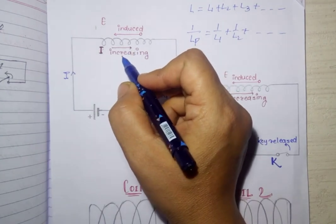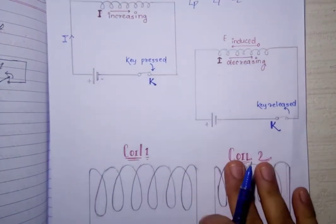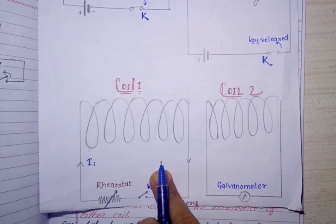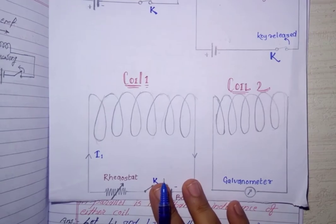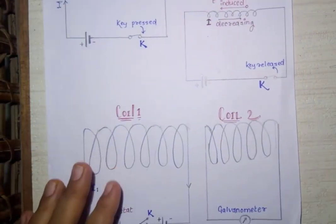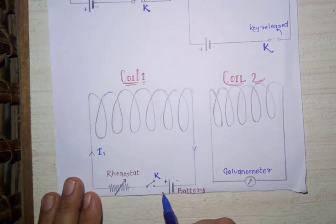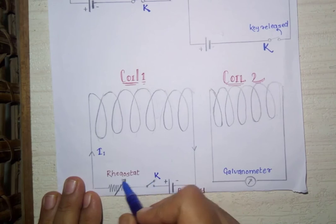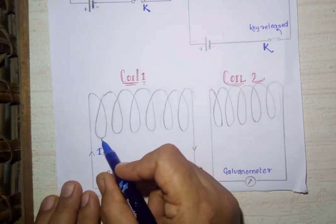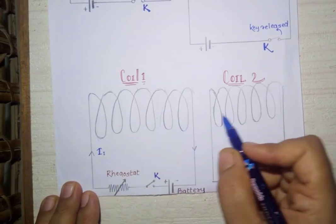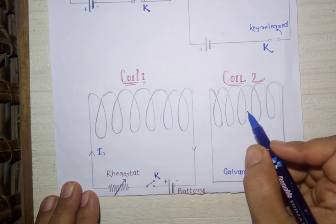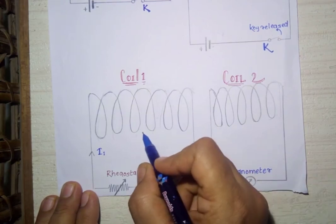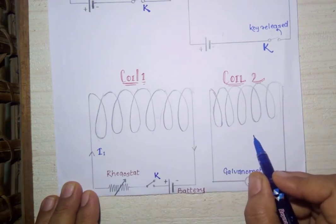For mutual inductance or mutual induction: in the first coil, a battery, key, and rheostat are connected, and we change the current in this coil. When we close or release the key, the current changes, causing a change in magnetic field and magnetic flux. A second coil is placed near the first coil with only a galvanometer connected to it. When there is a change in magnetic field and current in the first coil, an induced EMF and induced current are produced in the second coil.